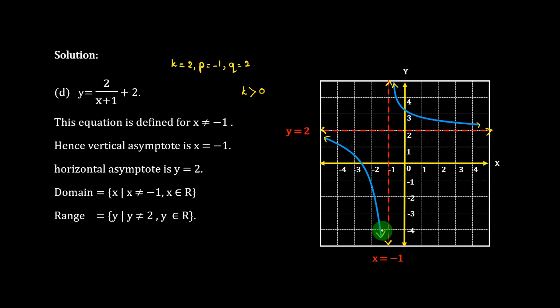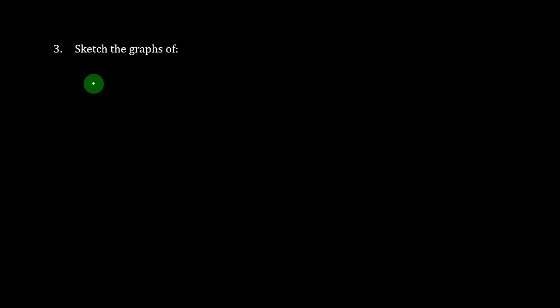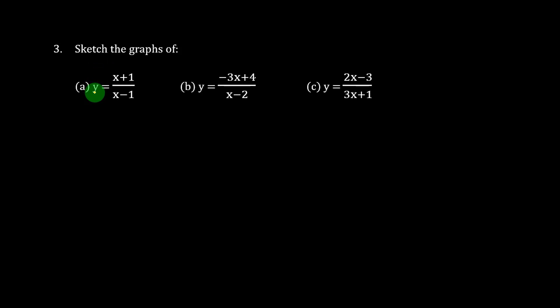I'm going to give you an example of what I'm going to do. Exercise number 3. Number 1 is y equals h plus 1 by h minus 1. B is y equals minus 3h plus 4 by h minus 2. C is y equals 2h minus 3 by 3h plus 1.